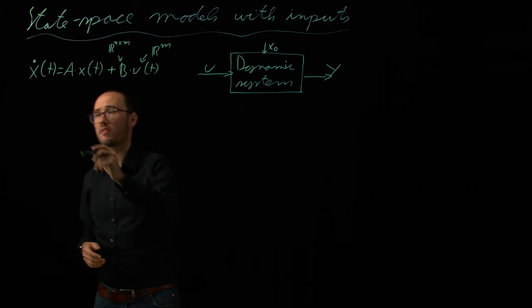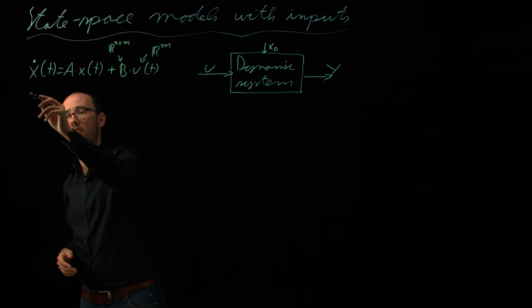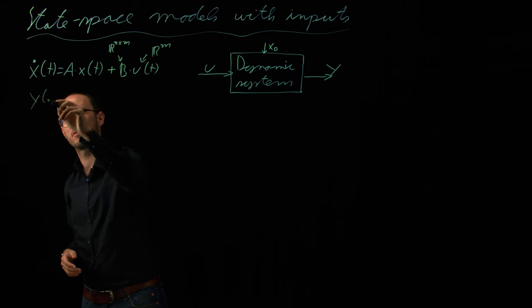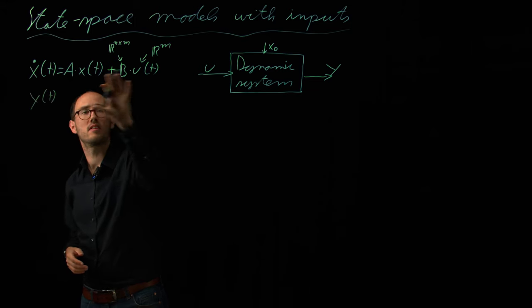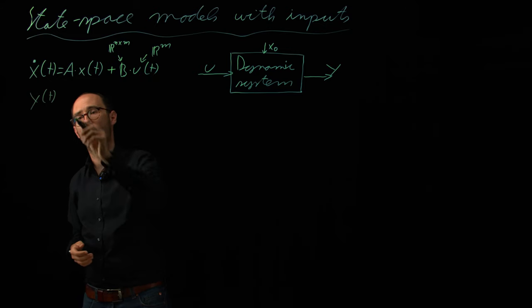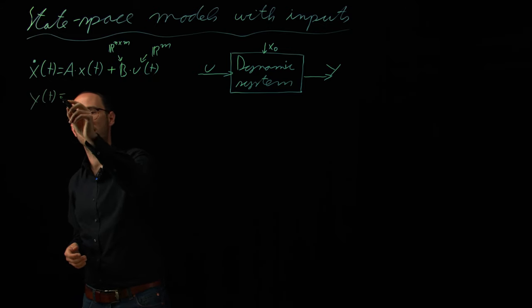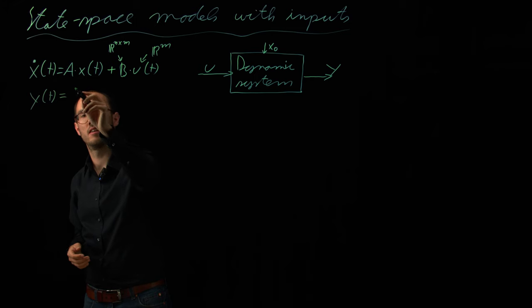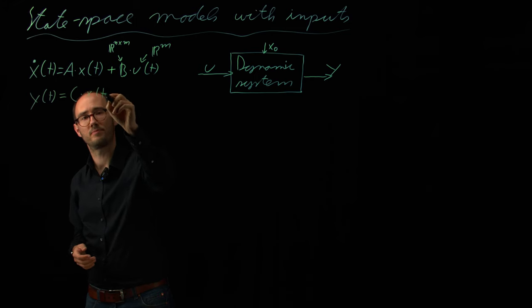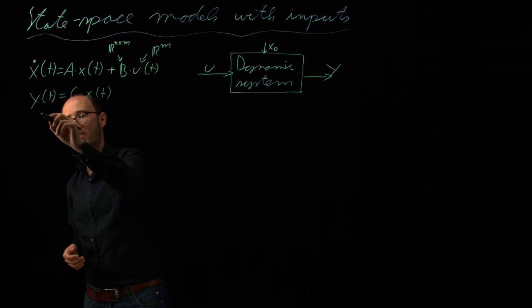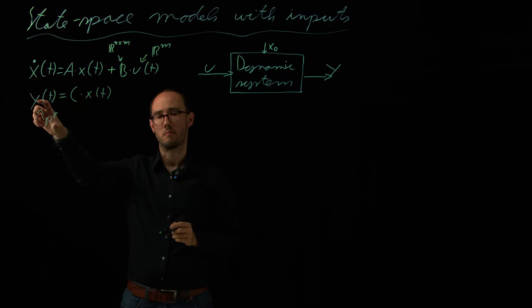Additionally, on that, we also need to consider the outputs or the measurements, y of t. And because here, on this side of the board, we will just consider the linear case, this is then also a linear mapping, c times x of t.